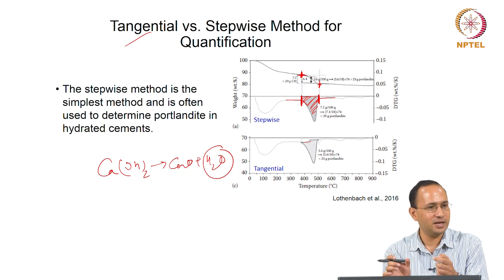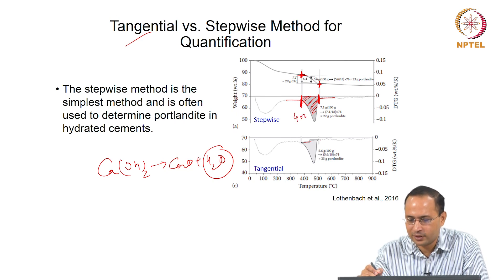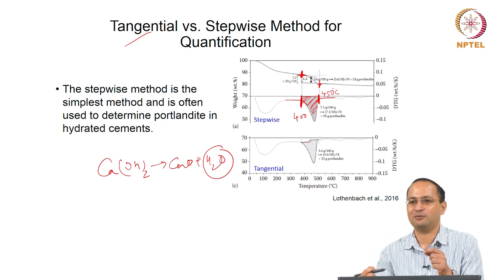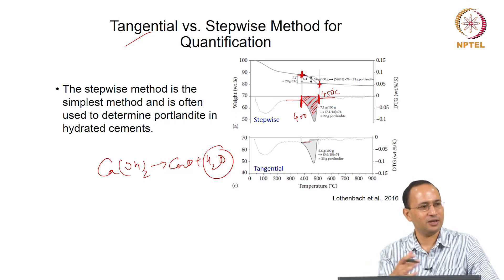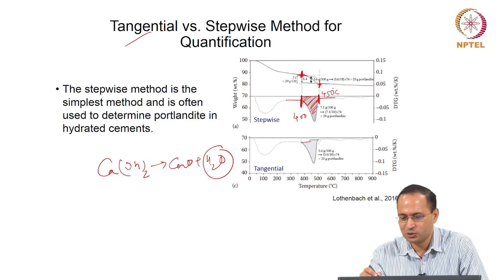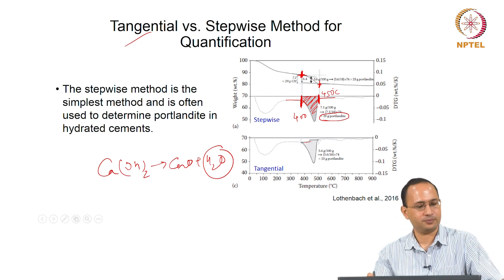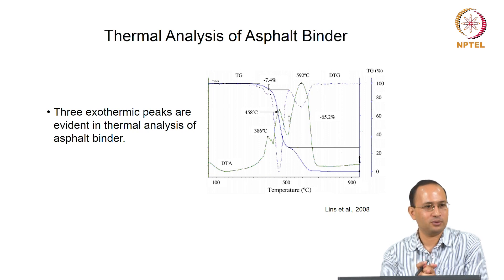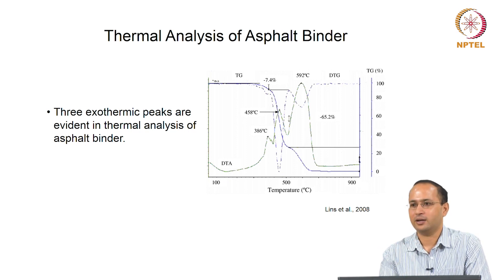Because it is easy, people often use stepwise method. Basically, once you know what is the temperature range, you just measure the weight loss. From DTG, you know it starts here, suppose 400, and stops here, 450. Now you go to your TG, check the weight, see the difference 400 to 450. That is the stepwise - because it is easier than tangential. If you are following a particular method, you have to be consistent. You cannot just follow methods according to samples. There will be some difference. In this case, stepwise gives you roughly around 29 grams of portlandite, and the tangential method will give you 23 grams of portlandite.